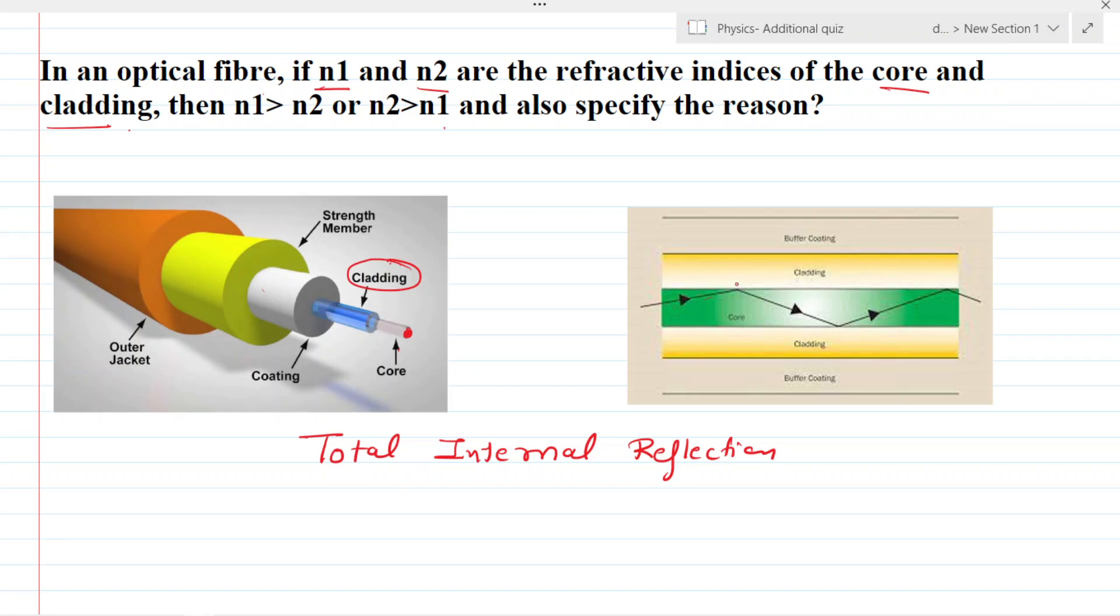So for this, we are using the concept of total internal reflection, so that the incident signal will reflect and the intensity is retained. Okay, so that means it should not transfer to the outer layer. So in total internal reflection, we know that the refractive index of inner material should be greater than the refractive index of outer material.